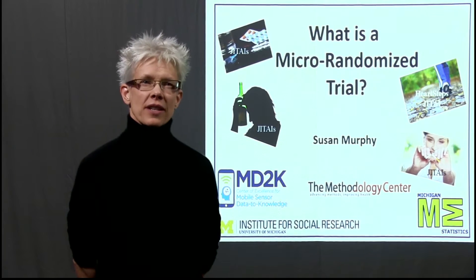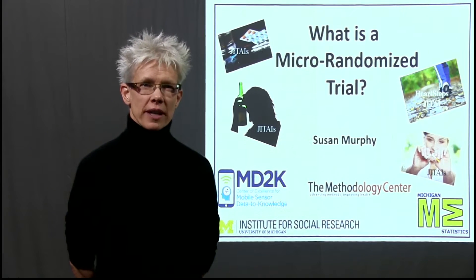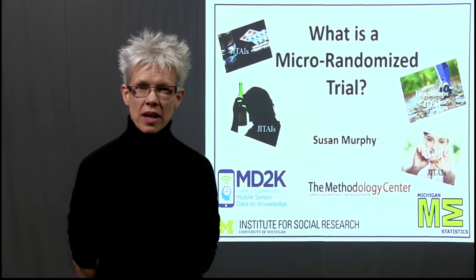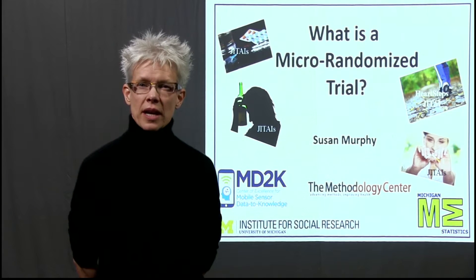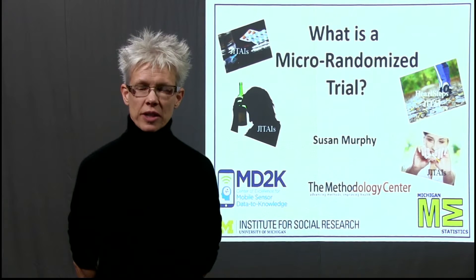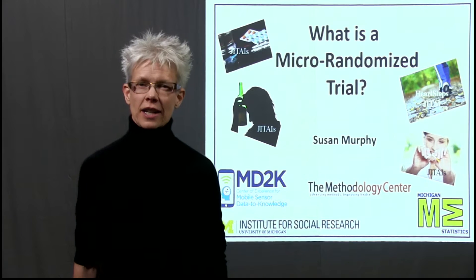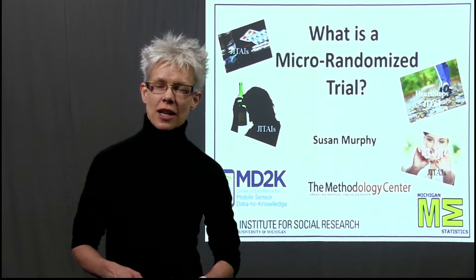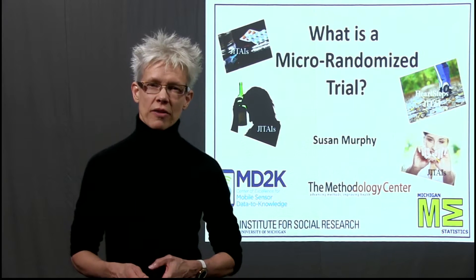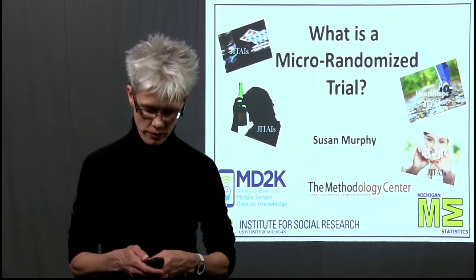This is the second video in a series of three videos. All of the videos concern how we might develop just-in-time adaptive interventions. In particular, this video covers a type of experimental trial that you could use to develop an adaptive intervention. We're going to go through that experimental trial design in the context of a smoking cessation study in which both myself and other members of my group are involved.